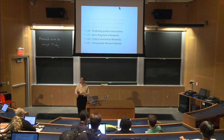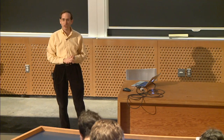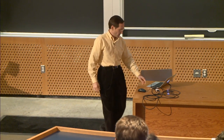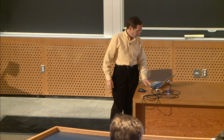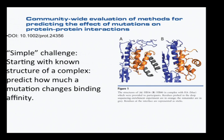We've been talking about predicting the structure of proteins. At the end of the last lecture, we started to talk a little bit about predicting interactions, and that's going to be the focus of today's lecture. We identified a couple of different possible prediction challenges. One was quantitative predictions of what happens when you make specific mutations in a known protein complex. We also talked about trying to predict the structure of just a pair of proteins, and then trying to do that on a global scale for all known proteins.